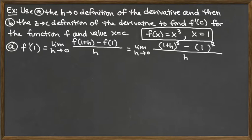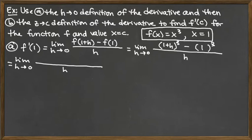Now we're looking at simplifying the top. I'm keeping the limit notation throughout, but to be able to take this limit, the h on the bottom needs to cancel with a common factor of h that eventually needs to be pulled out of the top. So we need to do a simplification of the top.